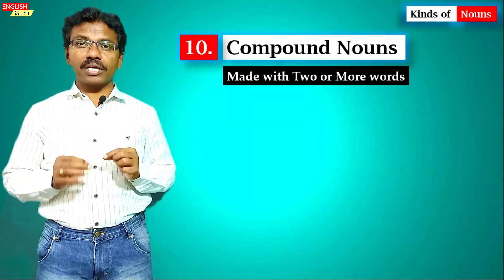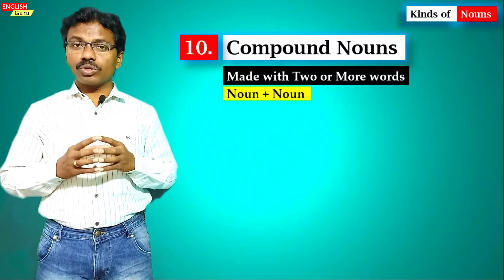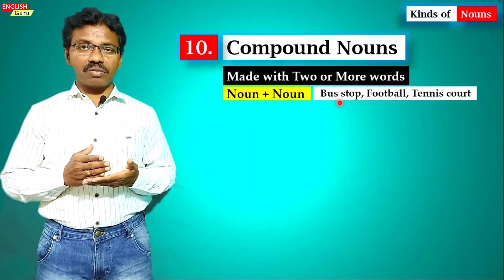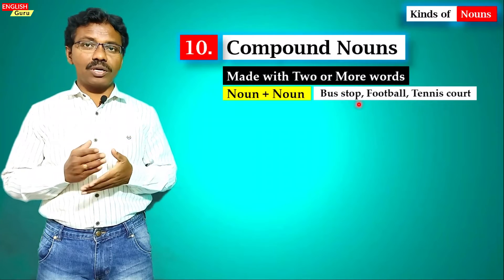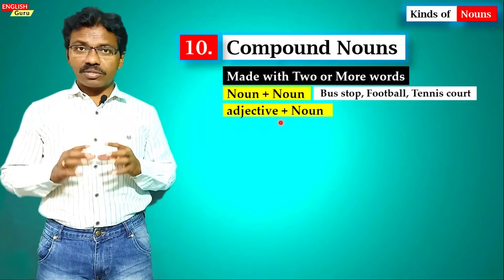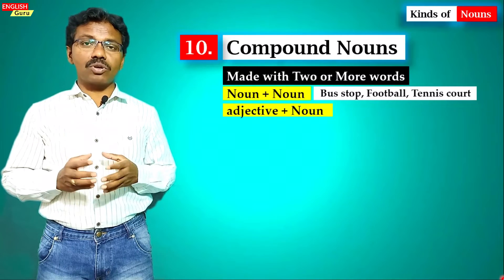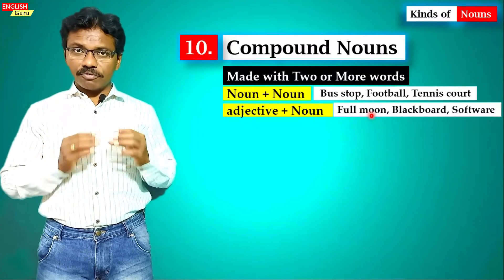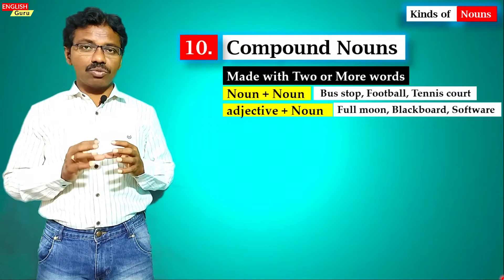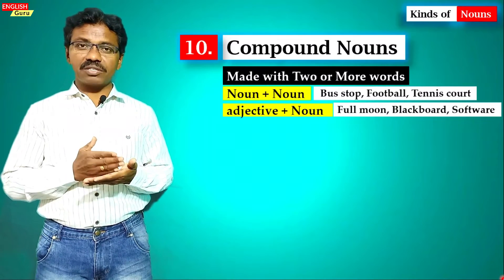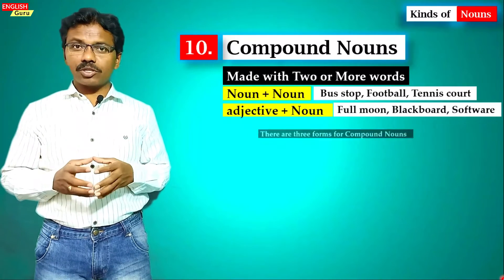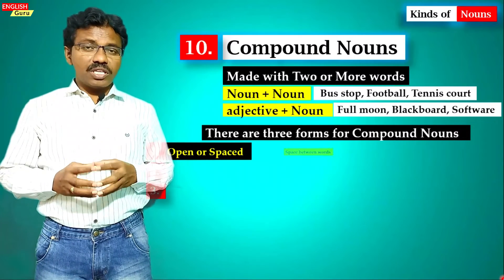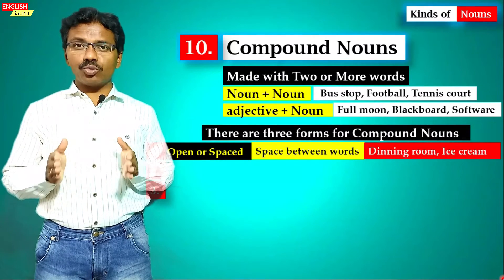The eleventh kind is compound nouns — a combination of two or more words. It can be a noun plus noun, such as 'bus stop' (both 'bus' and 'stop' are nouns combined into one). Other examples: 'football' and 'tennis.' Another combination is adjective plus noun — for example, 'full moon' ('full' is an adjective describing 'moon'). 'Blackboard' and 'software' are also compound nouns. There are three forms: open or spaced compound nouns, where there is a space between the two words.